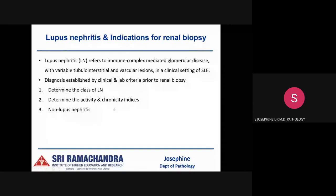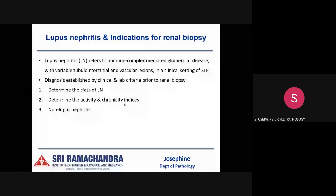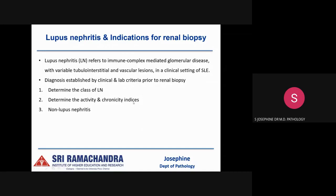The diagnosis of SLE is established prior to renal biopsy using clinical and lab criteria. Renal biopsy is needed primarily to determine the class of lupus nephritis and to determine the activity and chronicity index, which guide therapy. It also helps identify non-lupus nephritis — renal disease without immune deposits in a clinical setting of SLE — including lupus-related conditions like lupus podocytopathy and unrelated conditions like acute allergic interstitial nephritis.